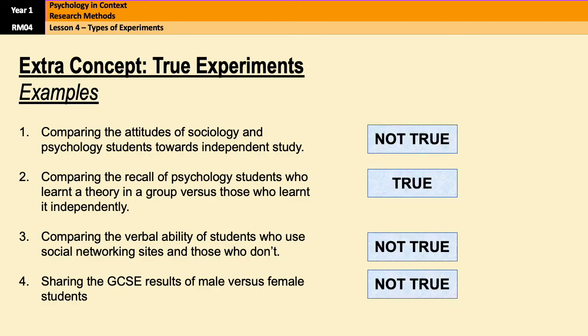Okay, here are the answers. So they were all not true experiments except number two. Okay, so in number one, the IV was naturally occurring because they either studied sociology or psychology. In number three, the verbal ability of students who use social networking sites or those who don't use social networking sites. Well, they either do or they don't unless the researcher actually specifically told the groups not to use social networking sites. That would also not be a true experiment. And then the last one is male versus female. So again, you can't directly manipulate the IV because you either are male or female, and therefore you go in one condition or the other. Number two is the only true experiment because provided the researcher actually tells them which group to go in, the researcher has control over the IV.